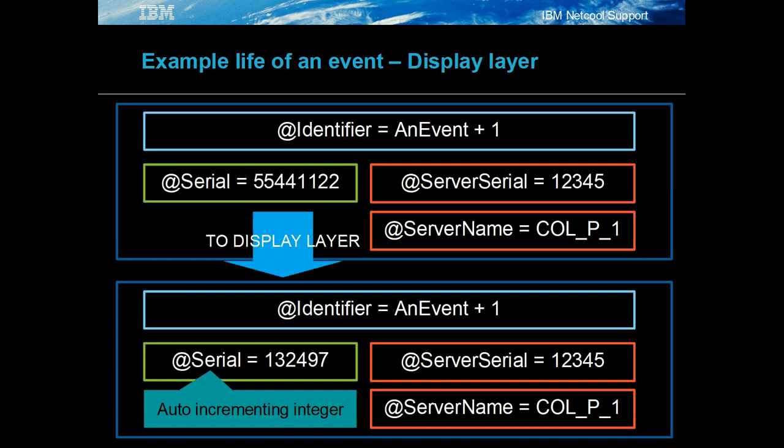The aggregation to display gateway forwards the event to the display layer. If the event does not already exist, it is assigned a serial value for the object server dis_one. In this example, serial is set to 132497. The dsd_new_row trigger preserves the server name and server serial, so that together they uniquely define the event for the gateways. In this manner, the event's definition is preserved throughout the system.